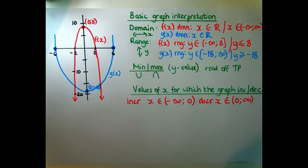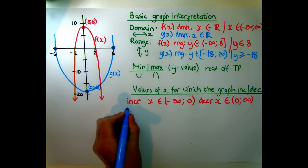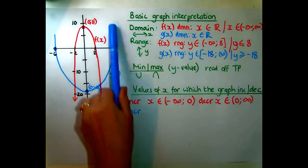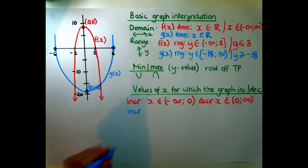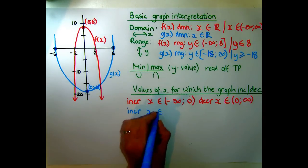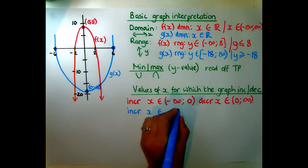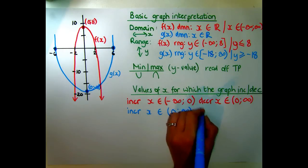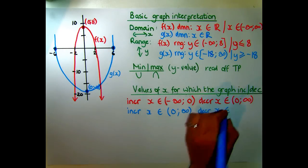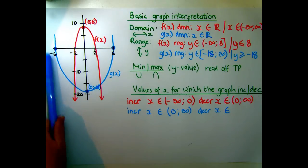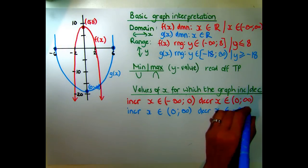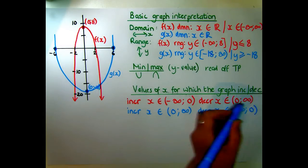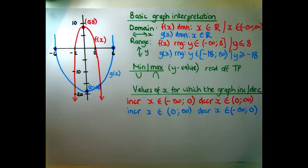For the blue graph, it is the opposite. The blue graph is increasing when x ∈ (0, +∞) — from x = 0 to positive infinity. It is decreasing when x ∈ (-∞, 0). So the two graphs have exactly opposite increasing and decreasing intervals. These concepts get a bit more complicated in grade 11, but this is as difficult as they get for now.